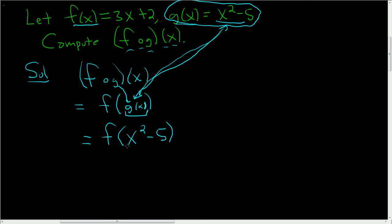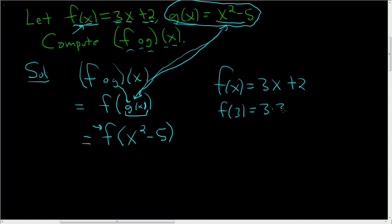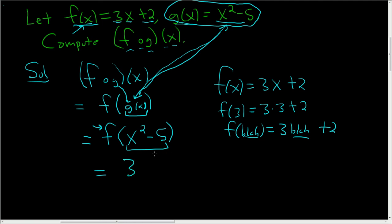The next step is to look at f. So f is up here: f is 3 times x plus 2. For example, f of 3 would be 3 times 3 plus 2. f of blah would be 3 times blah plus 2. In our case, the blah is x squared minus 5. So it's 3 times x squared minus 5 plus 2.